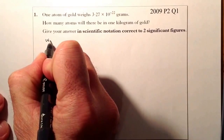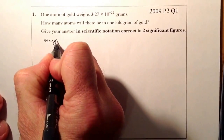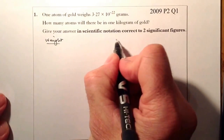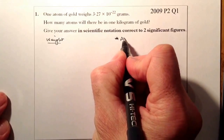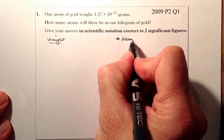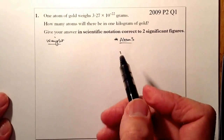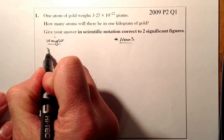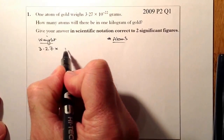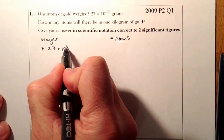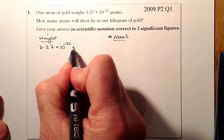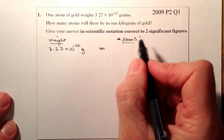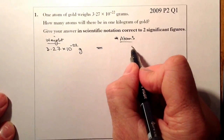Let's set this up as a proportion type question. I'll put the weight on this side, and the number of atoms on this side, so I can finalise my answer there. The weight I've been given is 3.27 times 10 to the minus 22 grams, and that equals one atom.